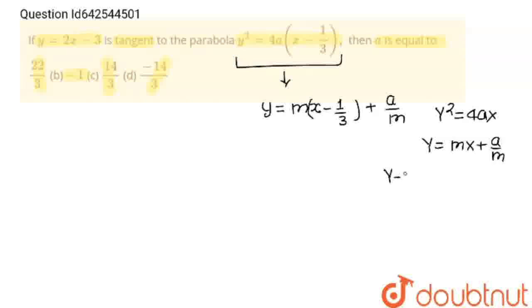So for parabola (y - k)² = 4a(x - h), what is the only change? At place of y, we have written y - k, and at place of x, we have written x - h.